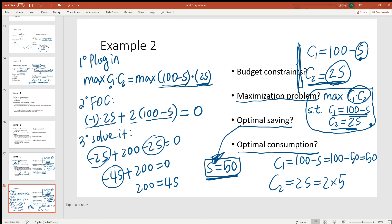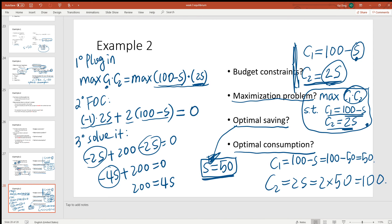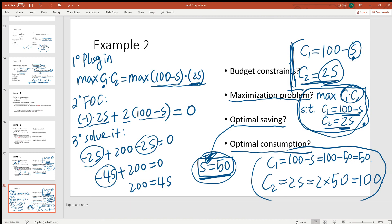Next year, c2, that's equal to 2s, which is 2 times 50, which is 100. So we're gonna eat 100 avocados next year. So that finishes this entire problem. We have the budget constraint, consumer problem, optimal saving, and optimal consumption. Did you get it right?